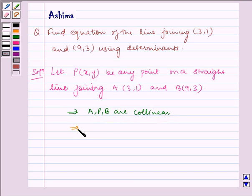Therefore it implies A, P, B are collinear, which implies area of triangle APB is equal to 0.